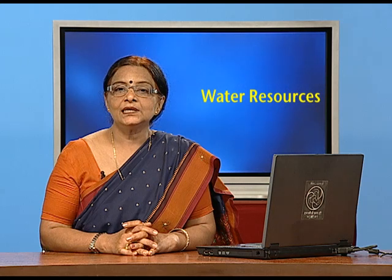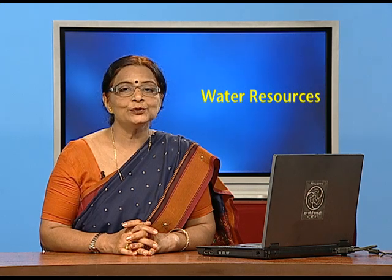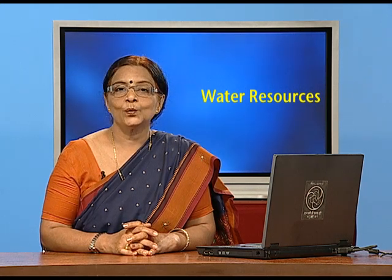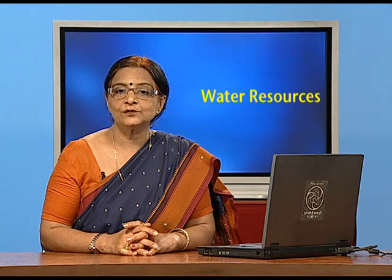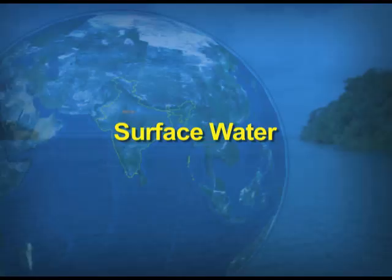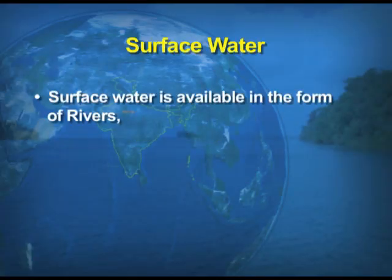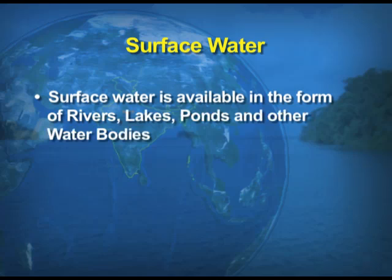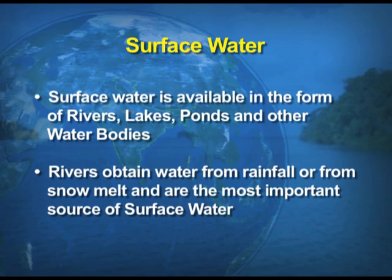There are two types of water resources: surface water and groundwater. Surface water is available in the form of rivers, lakes, ponds and other water bodies. Rivers obtain water from rainfall or from the melting of snow.